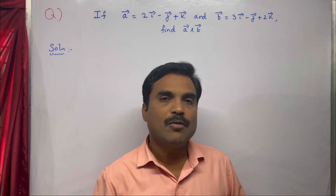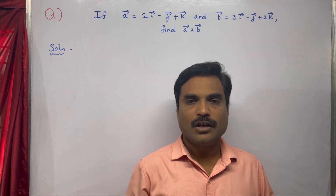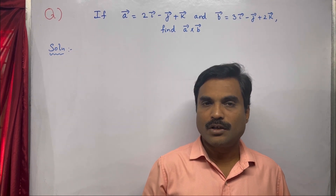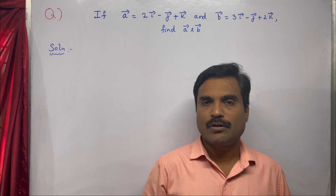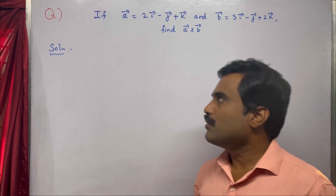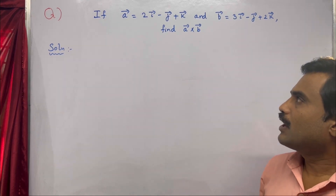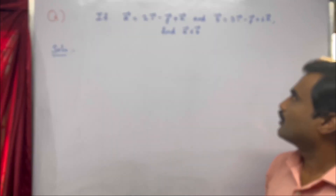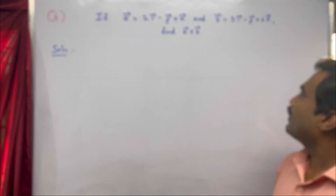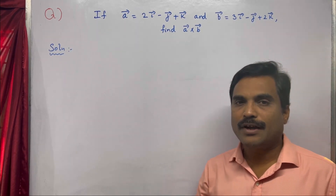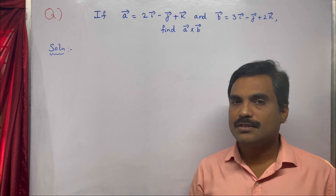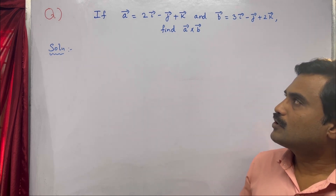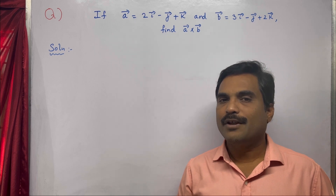Hi dear friends, welcome to my channel. In this new video I am going to solve a mathematical problem under the topic vector product of vectors. The problem is: if a̅ = 2i̅ − j̅ + k̅ and b̅ = 3i̅ − j̅ + 2k̅, find a̅ × b̅.